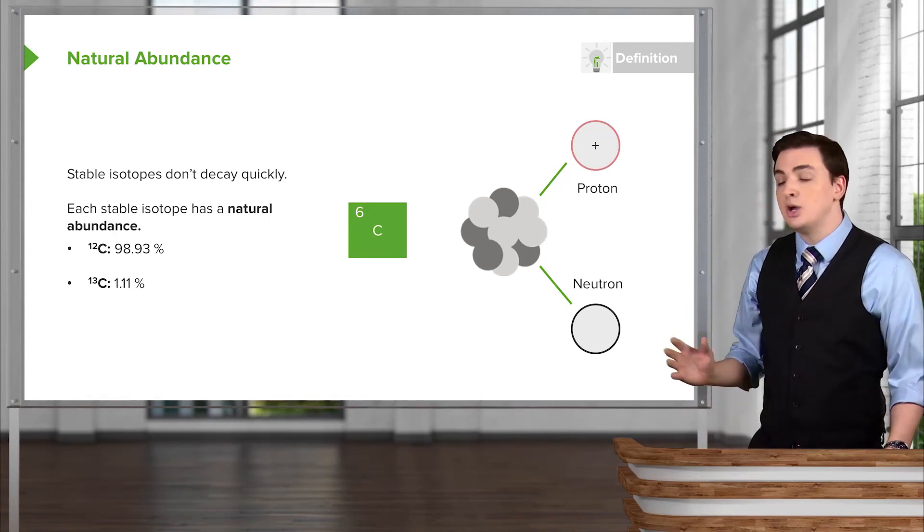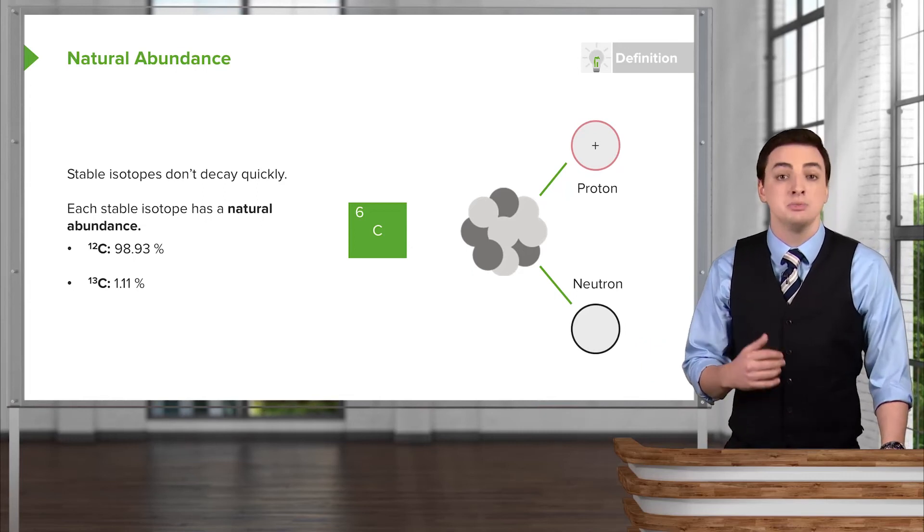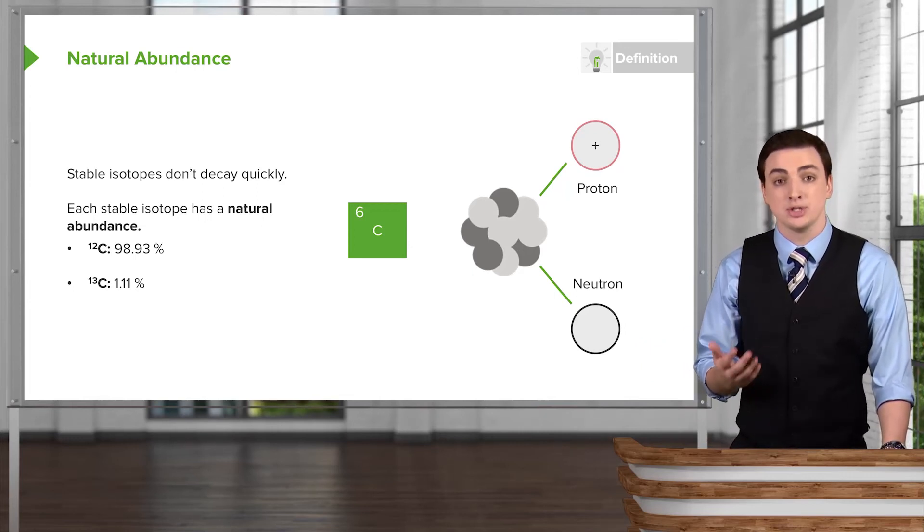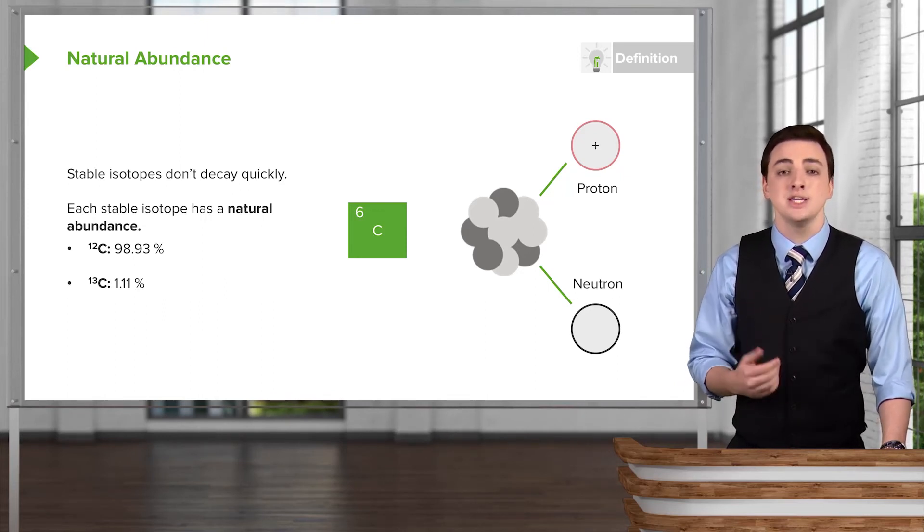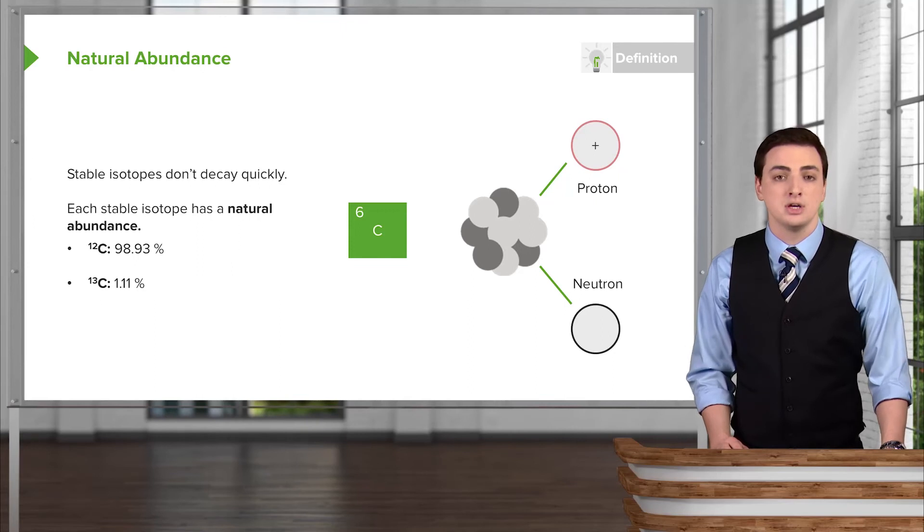So for example, if I scooped up some carbon right now, over 98% of that carbon would be carbon-12, that would be the natural abundance of carbon-12, and only a very small percentage of it would be carbon-13, and that's the natural abundance of carbon-13.